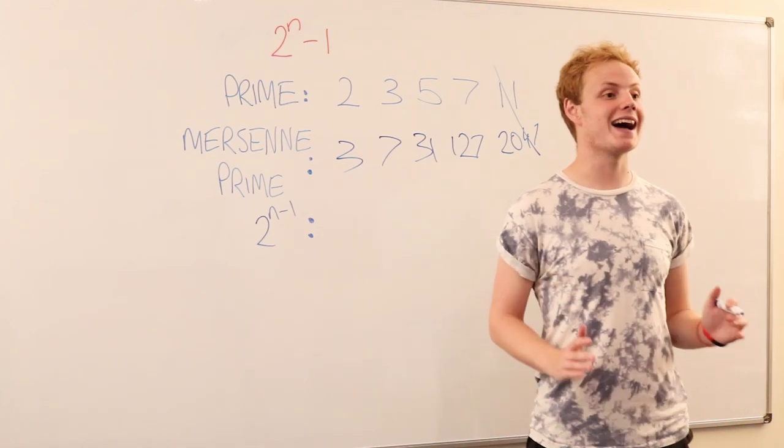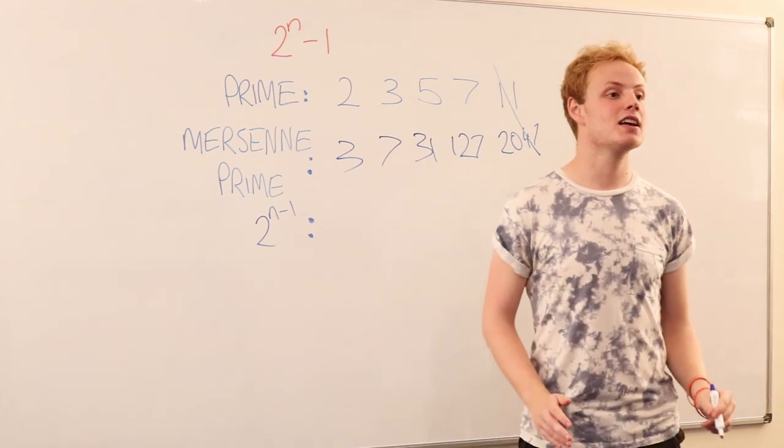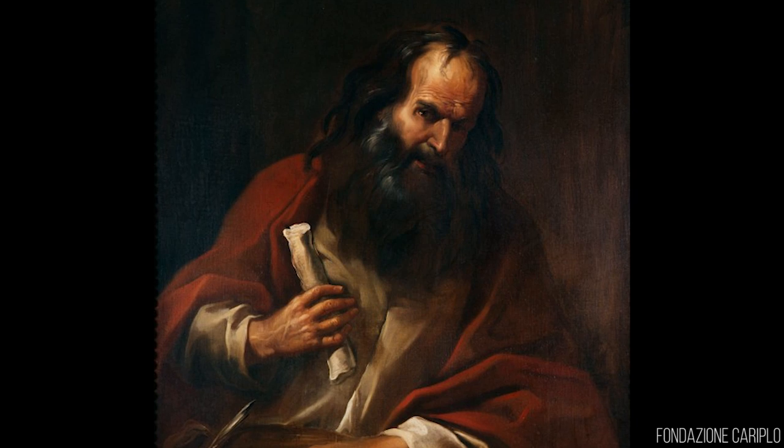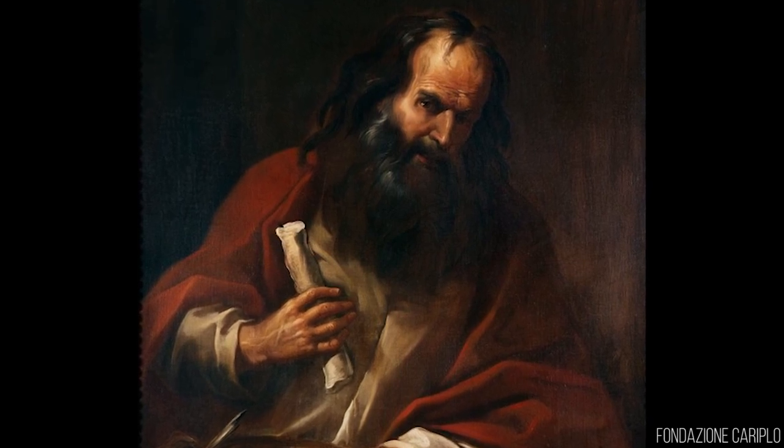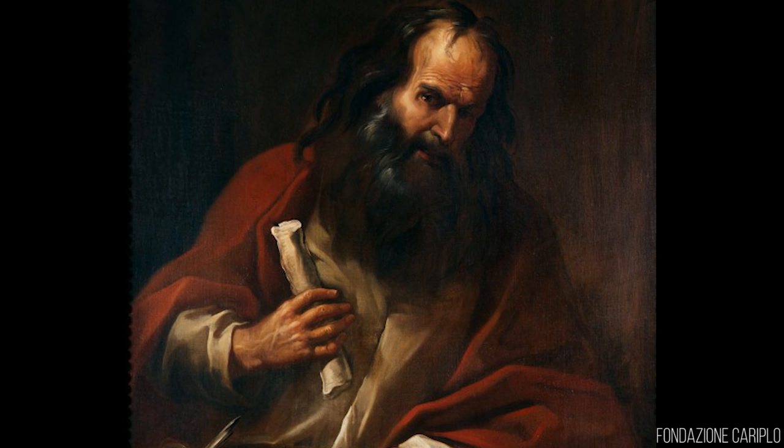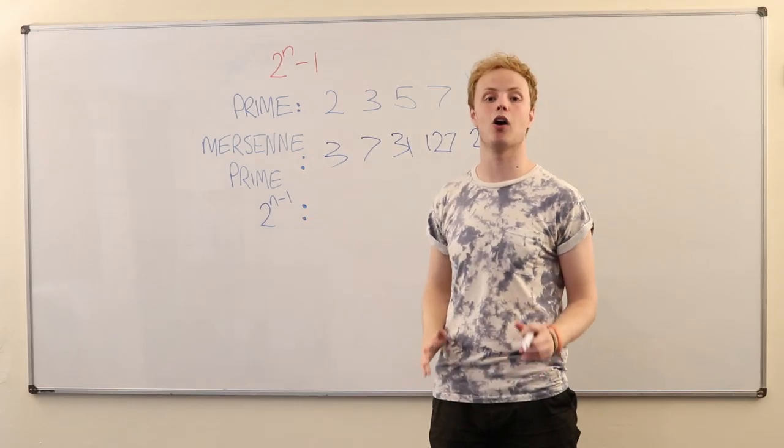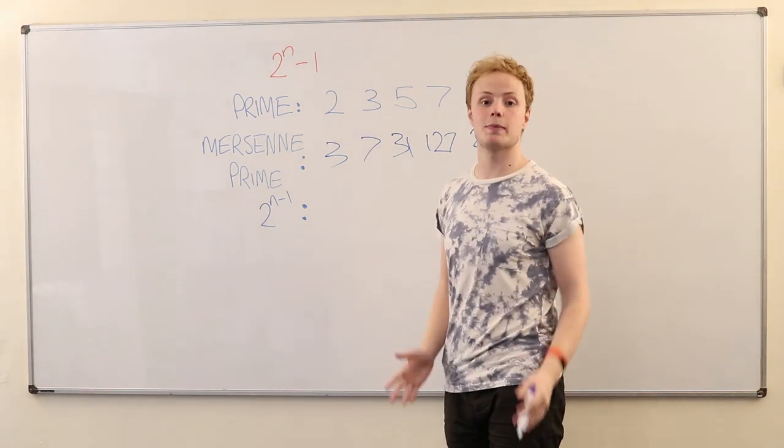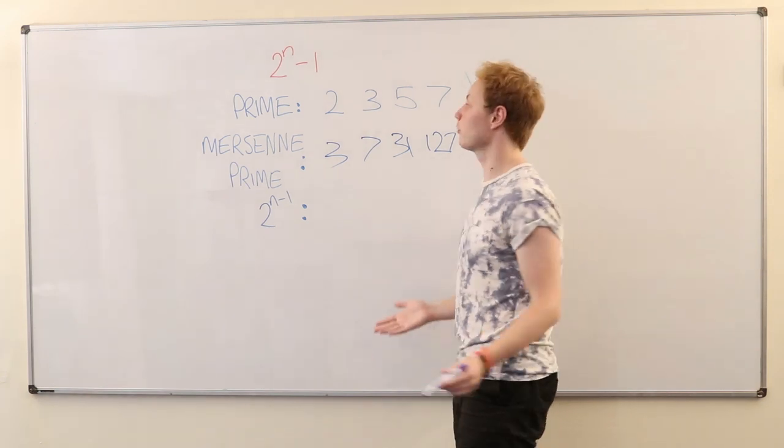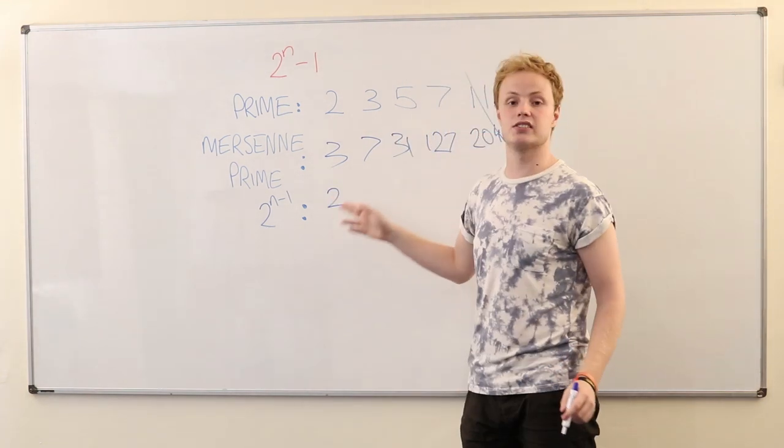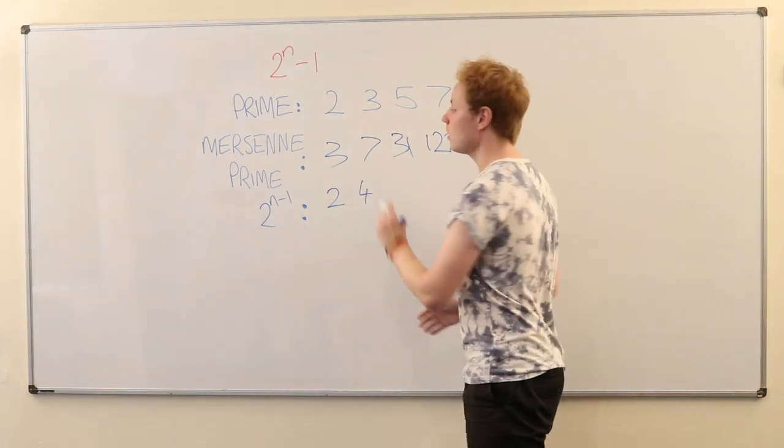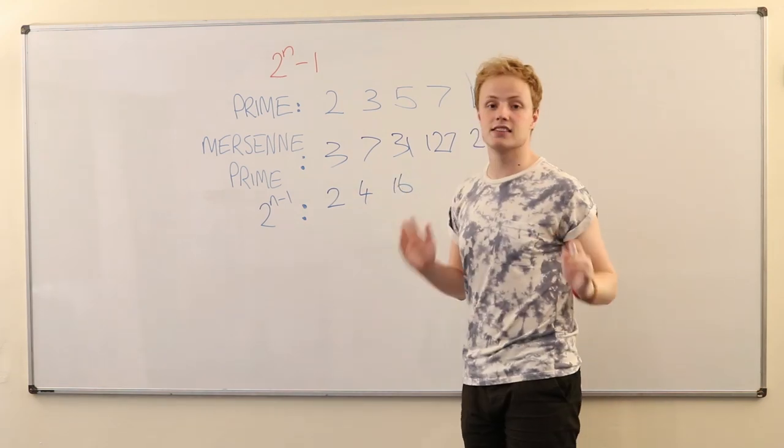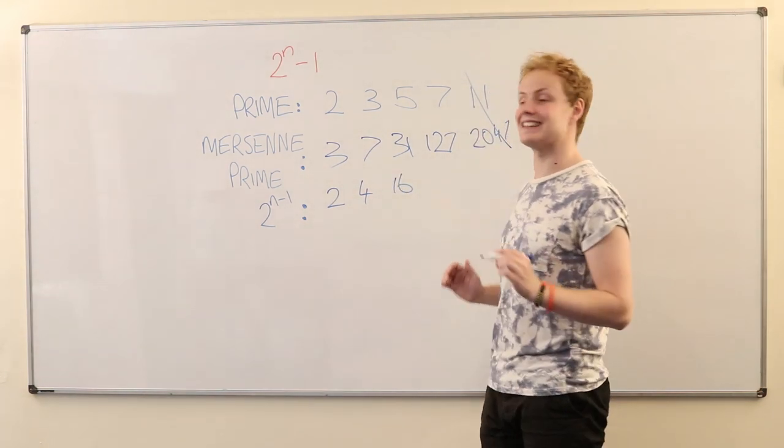So now, on to the link between perfect numbers and Mersenne primes. So suppose we have prime number n that gives us a Mersenne prime as so. Now, the ancient Greek mathematician Euclid proved that something quite amazing happens when you multiply this Mersenne prime by this value here, 2 to the power of n minus 1. So let's give it a go. 2 minus 1 is 1, 2 to the power of 1, well, anything to the power of 1 is just itself, so we get 2 there. 3 minus 1 is 2, 2 squared gives us 4. 5 minus 1 is 4, 2 to the power of 4 gives us 16. And 7 minus 1 is 6, and 2 to the power of 6 is 64.